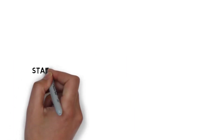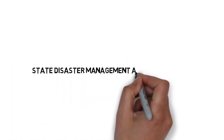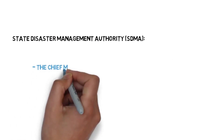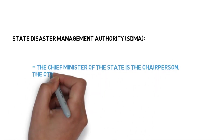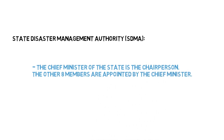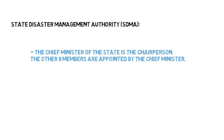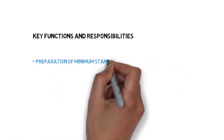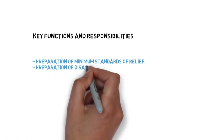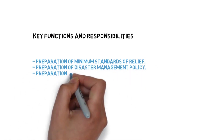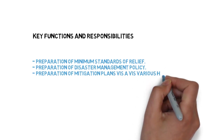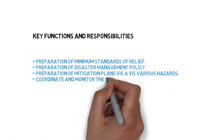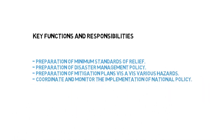The second important provision is the State Disaster Management Authority. The Chief Minister of the state is the chairperson and the other eight members are appointed by the Chief Minister. The responsibilities of the State Disaster Management Authority include preparing minimum standards of relief, preparing disaster management policy, mitigation plans for various hazards, and coordinating and monitoring the implementation of national policies.